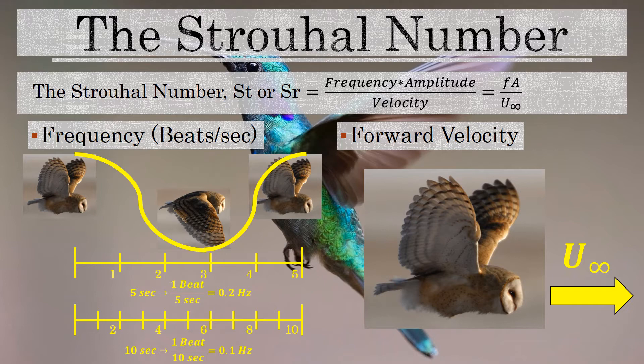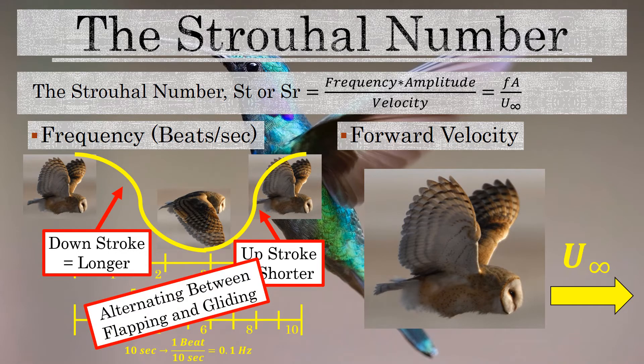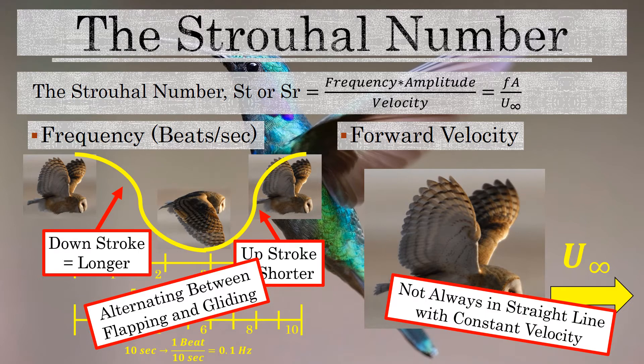In the real world, the down stroke and the up stroke are not the same amount of time — the down stroke tends to be longer than the up stroke, and sometimes birds alternate between flapping and gliding. For forward velocity, that's the speed at which the bird is actually traveling in the forward direction, and birds aren't always flying in a straight line at constant velocity. So when calculating the Strouhal number, we take averages for wing beats per second, forward speed, and amplitude.